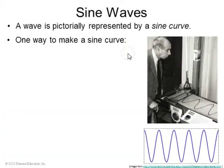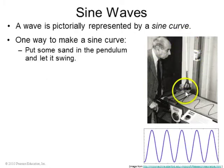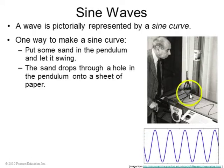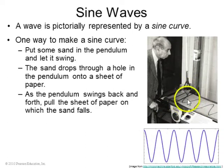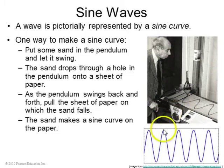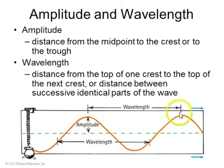A sine curve is one way of visualizing a wave. For example, if you have a pendulum that has a little bag of sand on the bottom with a hole that lets the sand fall out, and you have a piece of paper dragged underneath it, this pendulum will trace out a sine wave as it swings back and forth. The sine wave has an amplitude, which means how wiggly it is. The amplitude is defined as the distance from the midpoint out to either a crest or trough. The wavelength is the distance between adjacent crests or adjacent troughs.